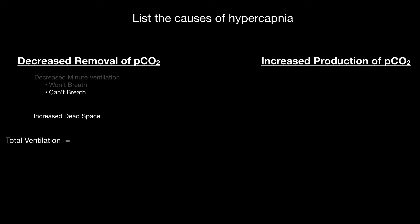Remember, total ventilation is equal to alveolar ventilation plus dead space ventilation. If total ventilation stays exactly the same but dead space ventilation goes up, alveolar ventilation has to go down. This happens in two classic pathological conditions: COPD and asthma. That's why these patients have trouble ventilating and often live with higher CO2s, at least when it comes to COPD.